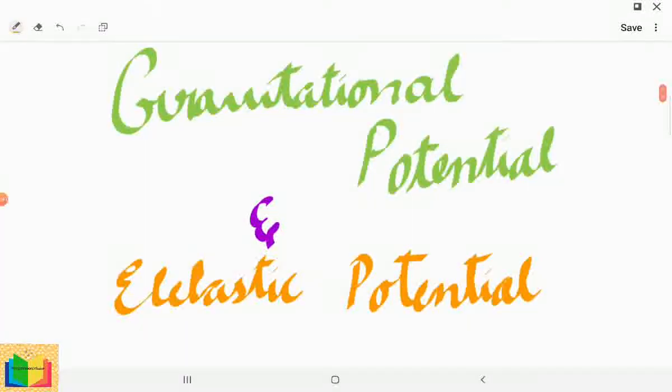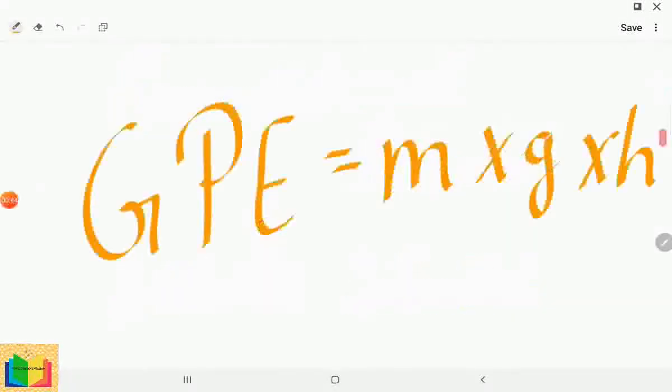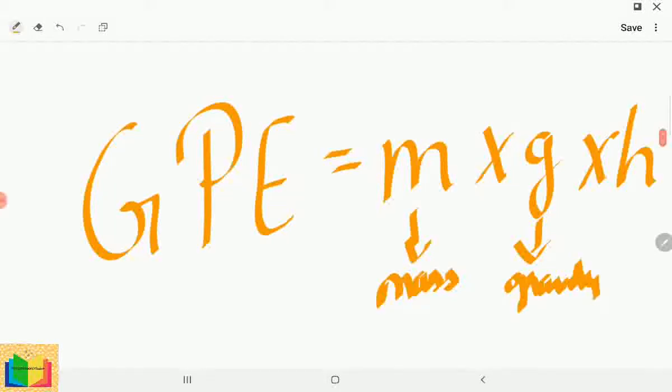Gravitational potential energy of a body, GPE, which is equal to M into G into H, where M is equal to the mass of an object, G is equal to acceleration due to gravity, whereas H is equal to height.